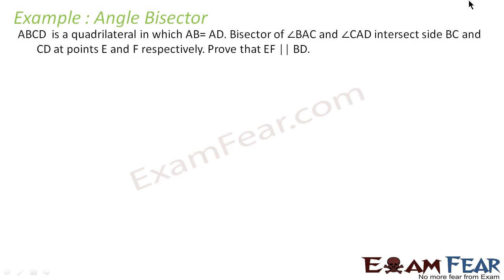ABC is a quadrilateral with AB equal to AD. The bisectors of angle BAC and angle CAD intersect BC and CD at points E and F respectively. We have to prove that EF is parallel to BD.